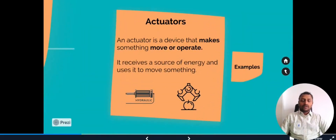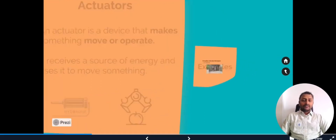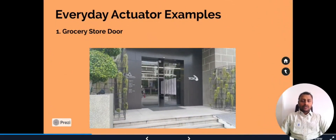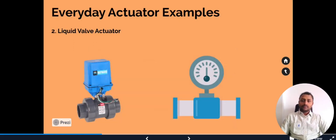Let's get into actuators. Actuators come into picture whenever sensing has happened and you want to act upon it. For example, with the fire alarm sensor — whenever a fire alarm triggers and you want to turn on the water sprinklers, actuators make that operation work. Everyday actuator examples include grocery store doors that automatically open when you walk in, and liquid valve actuators commonly used in irrigation to turn water flow on or off.